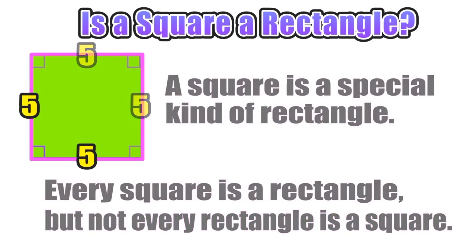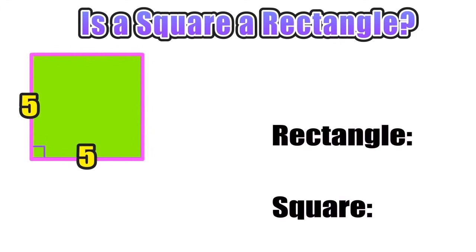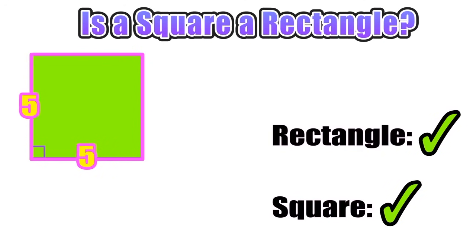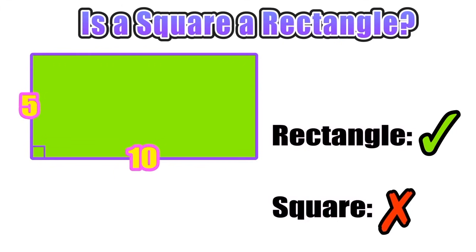If you have a figure with four right angles and four sides, you can conclude that it is a rectangle. If those four sides are all the same length, you can also conclude that it is a square. Remember: a square is a special kind of rectangle, but not every rectangle is a square. If we extend the figure and double the length from five to ten, it still represents a rectangle — but it is not a square, because the side lengths are not the same.